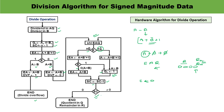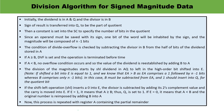When the sequence counter reaches 0, the operation ends. The quotient is available in Q and the remainder is in A. This is how you can explain the hardware algorithm and flowchart for the division algorithm for signed magnitude data. Thank you so much for watching this video.